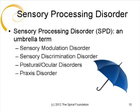Sensory processing disorder is an umbrella term that encompasses a number of disorders. Sensory modulation disorder, or problems with self-regulation; sensory discrimination disorder, or problems processing qualities of sensory inputs; postural and ocular disorders, or difficulties with body control and control of eye movements; and praxis disorders, or difficulty planning actions, all fall under the umbrella of sensory processing disorder.